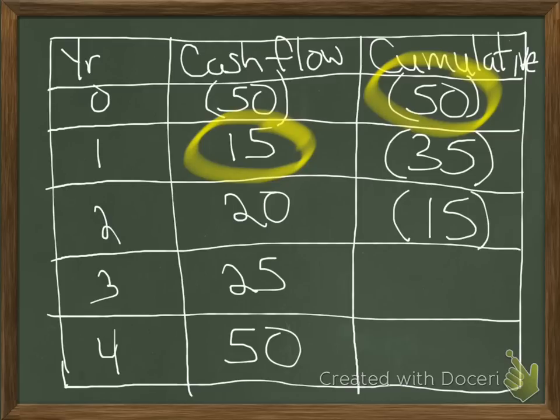Now, negative 15 plus 25, all right, we are in positive territory. We are at 10. We have now paid back our initial investment. I don't even have to look at year four. It's 60, which is pretty obvious.